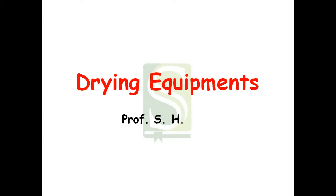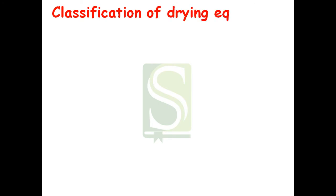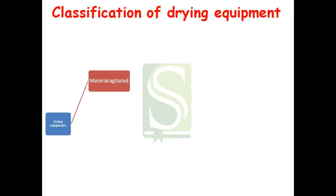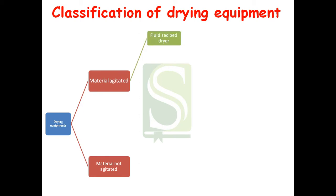Hello dear friends, today we are going to learn about drying equipment. First, let us see the classification of drying equipment. Drying equipment is classified as material agitated, in which the material gets agitated, and the second class is in which the material does not get agitated.